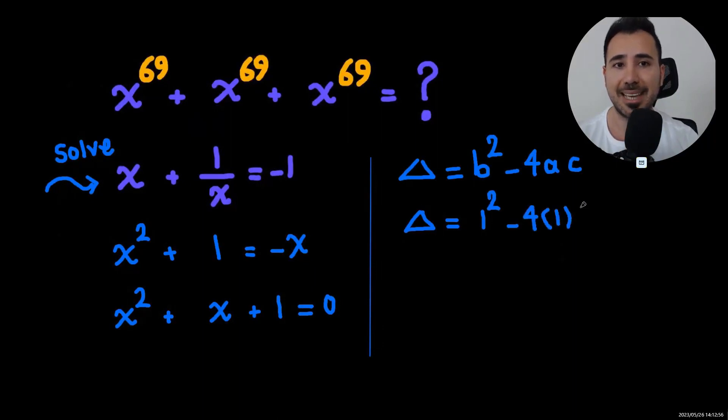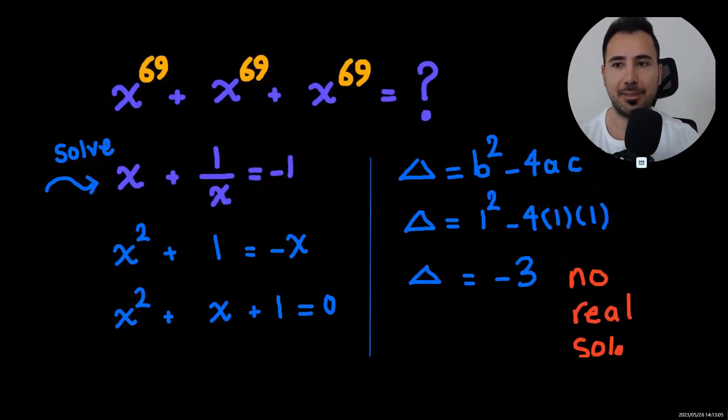When we do this we understand that the discriminant is negative, so there are no real solutions. So the question is difficult, right? We can't solve the equation or we have to find complex solutions to the power of 69, very very very difficult.